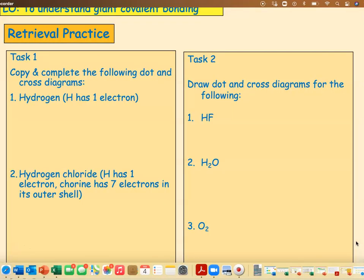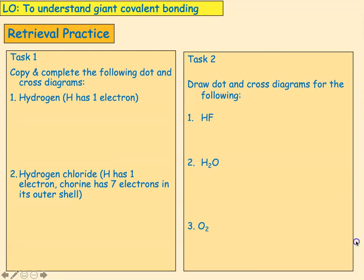Okay, let's self-assess our work now. The dot and cross diagram for hydrogen looks like that. Each of the hydrogens has one electron in its outer shell. The dot represents the electron from one of the hydrogens, say the one on the left, and the cross represents the electron in the outer shell of the hydrogen on the right. They both share one electron each, so it's one covalent bond.